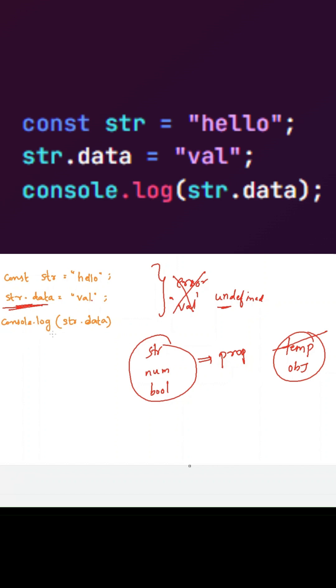Now you might ask, if it's storing it in a temporary object, it should return that value to the console. But no, because once it is executed successfully, this temporary object will be destroyed.